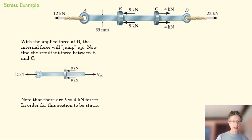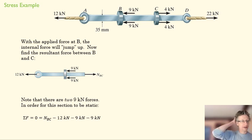So here we can solve for N. And this is a little tricky, this drawing. It looks like there's only one nine kilonewton force, but there are actually two nine kilonewton forces here. And so we can solve for N_BC and find that it's 30 kilonewtons.